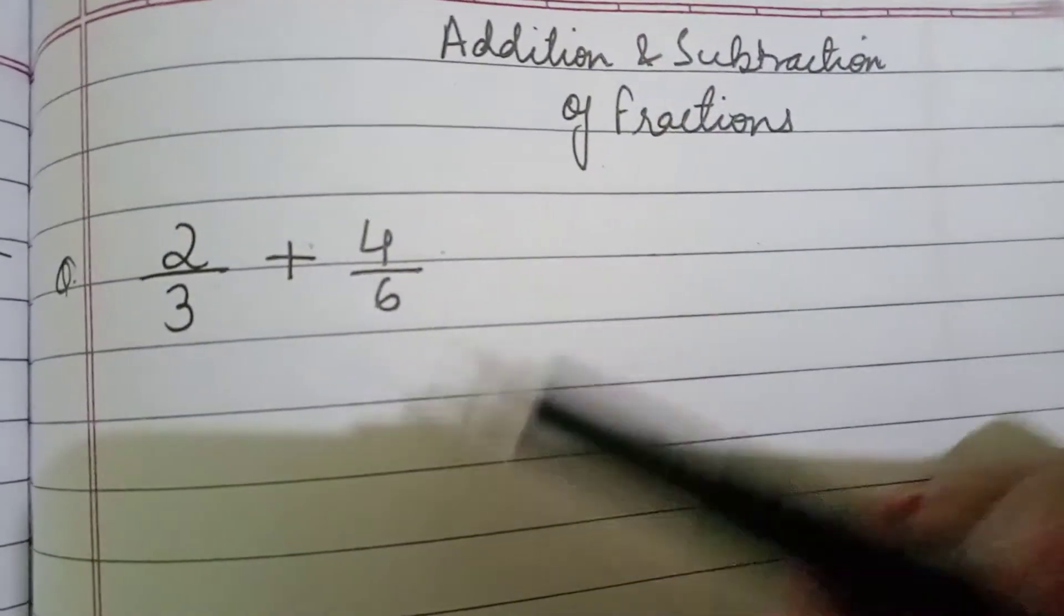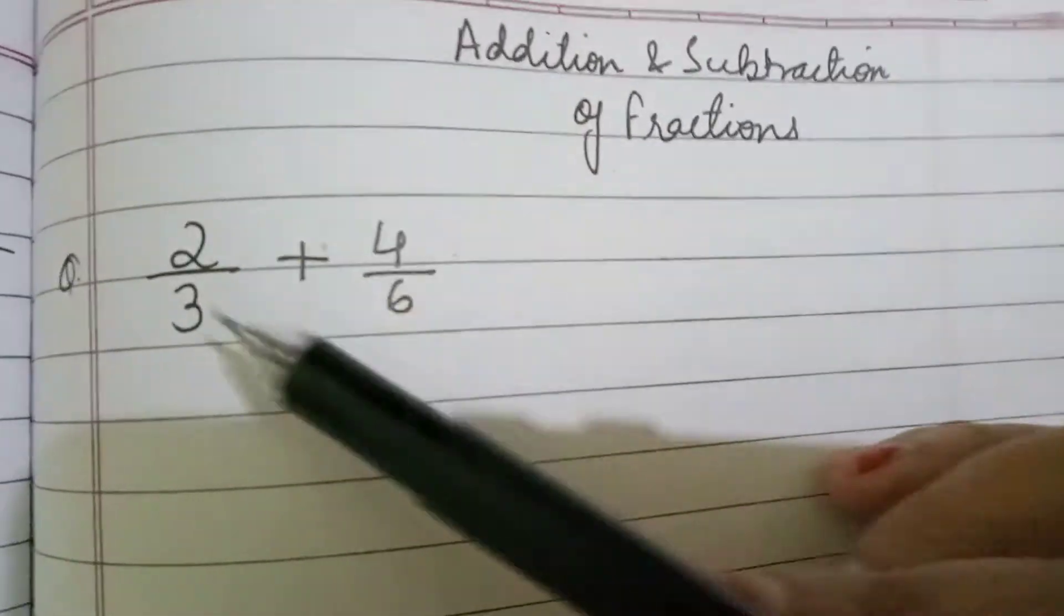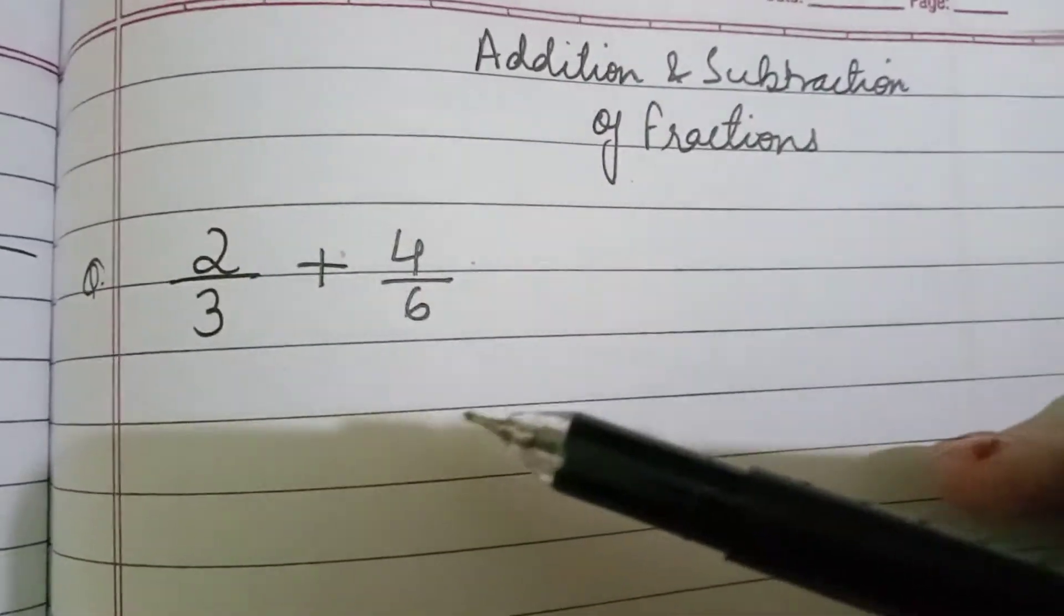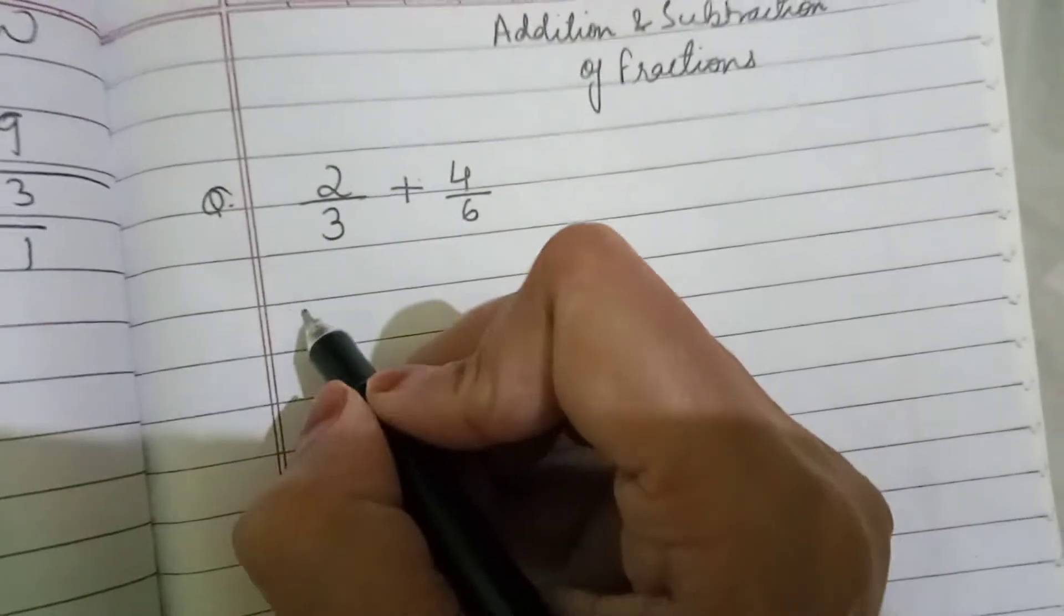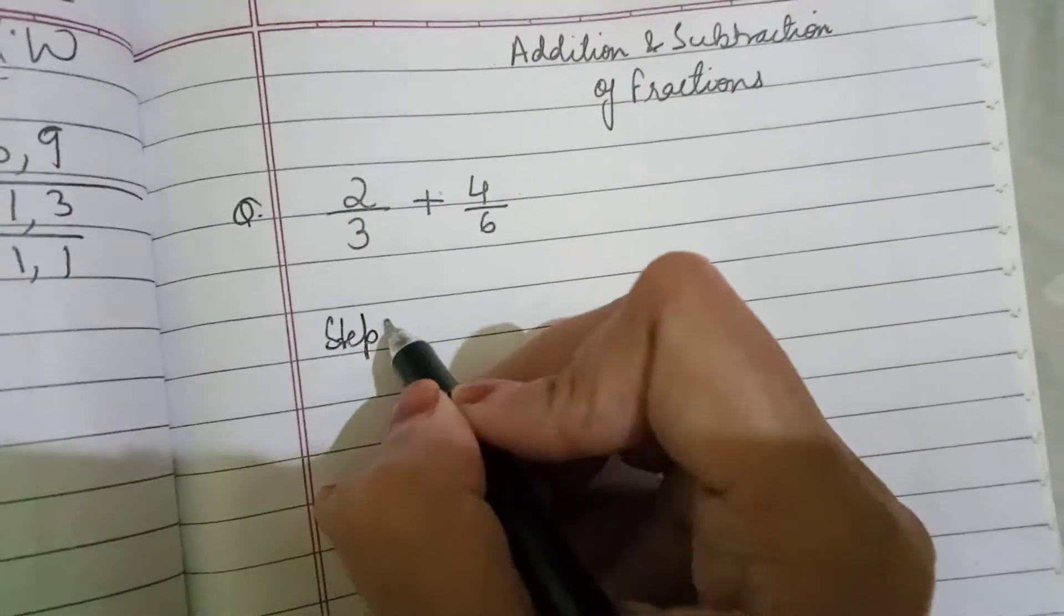So to convert it into, first we will convert this fraction, both the fractions into like fractions. How we are going to do? Step number 1.